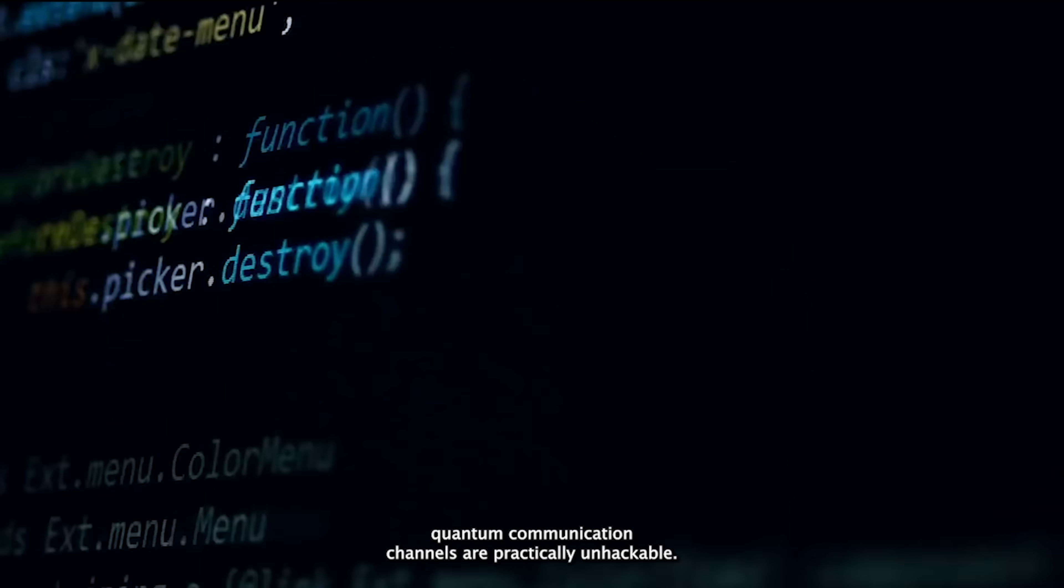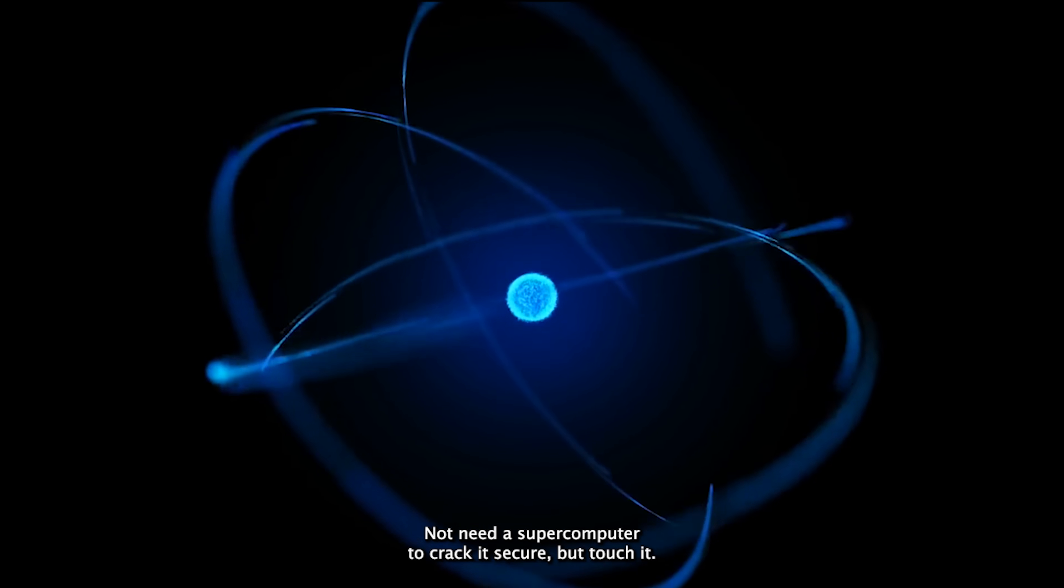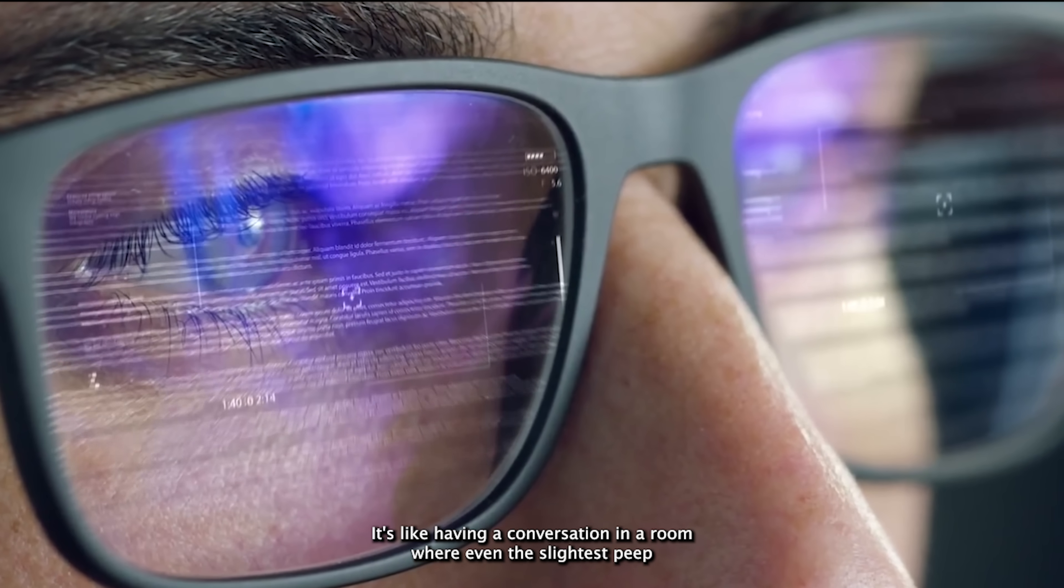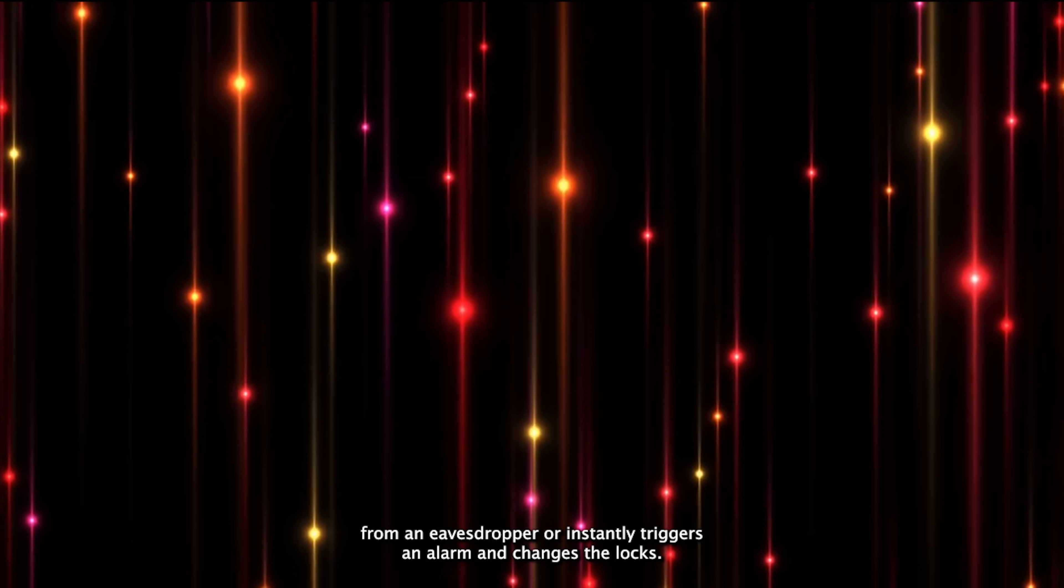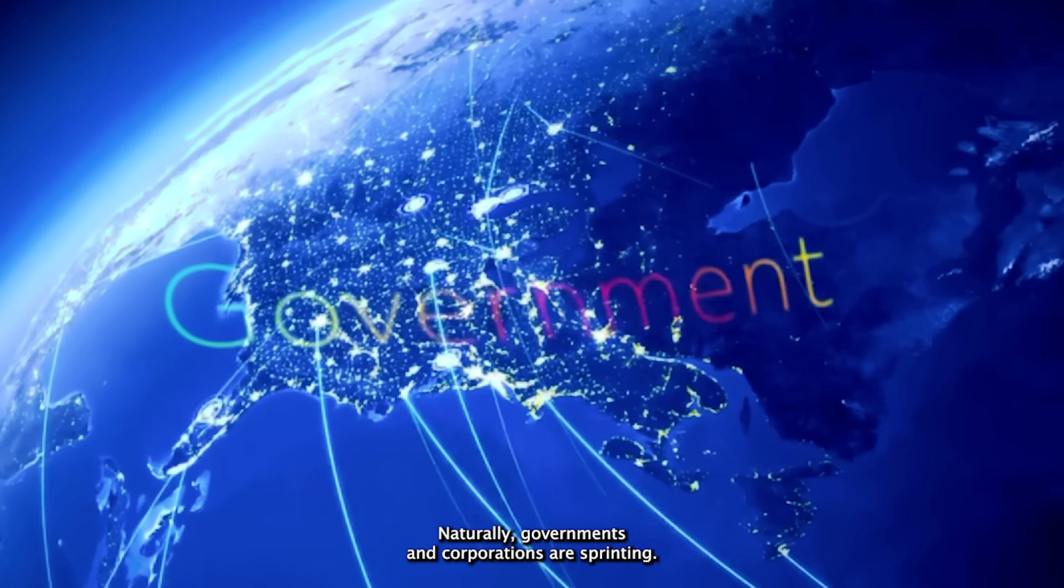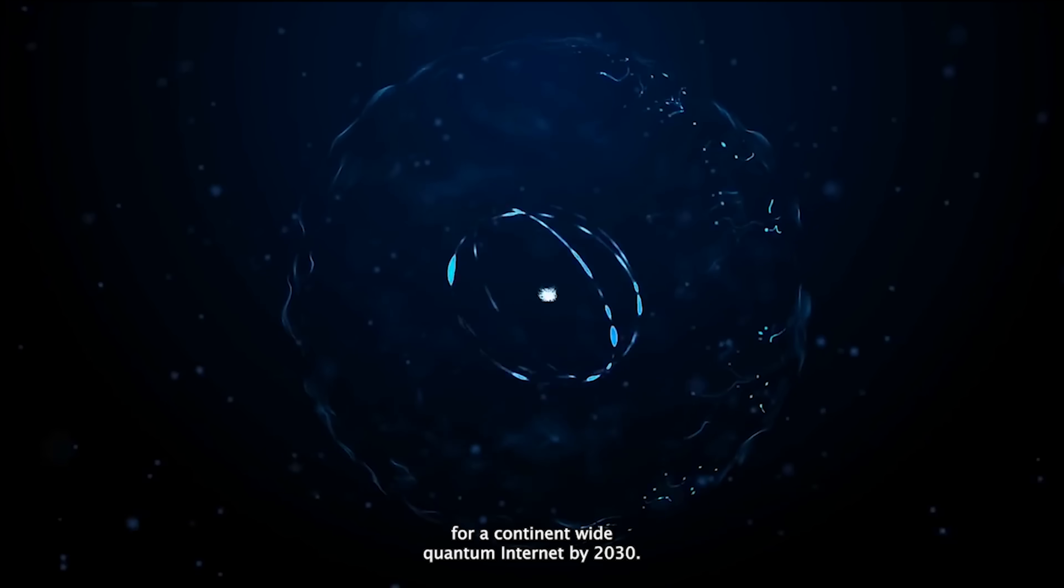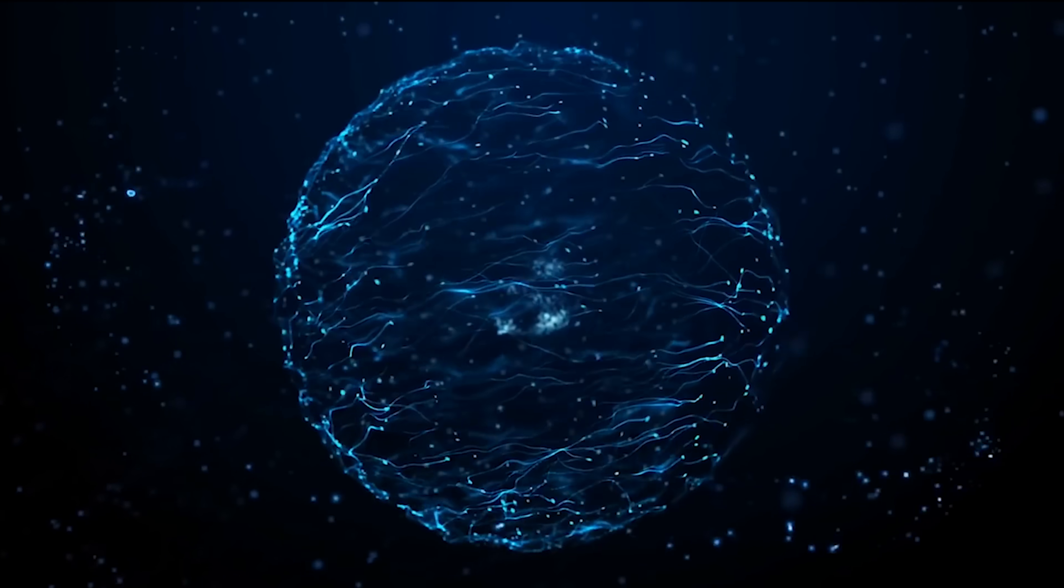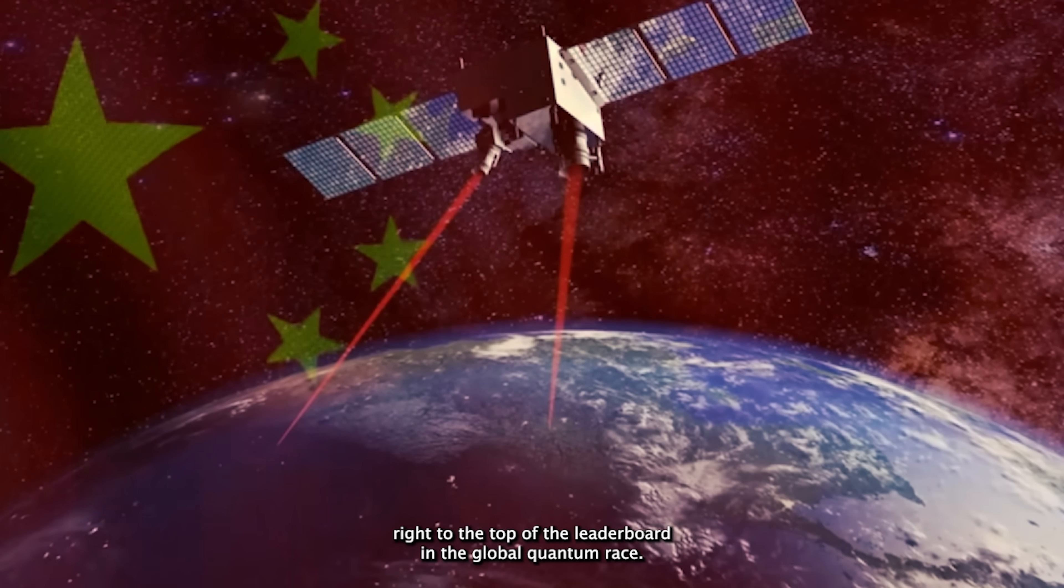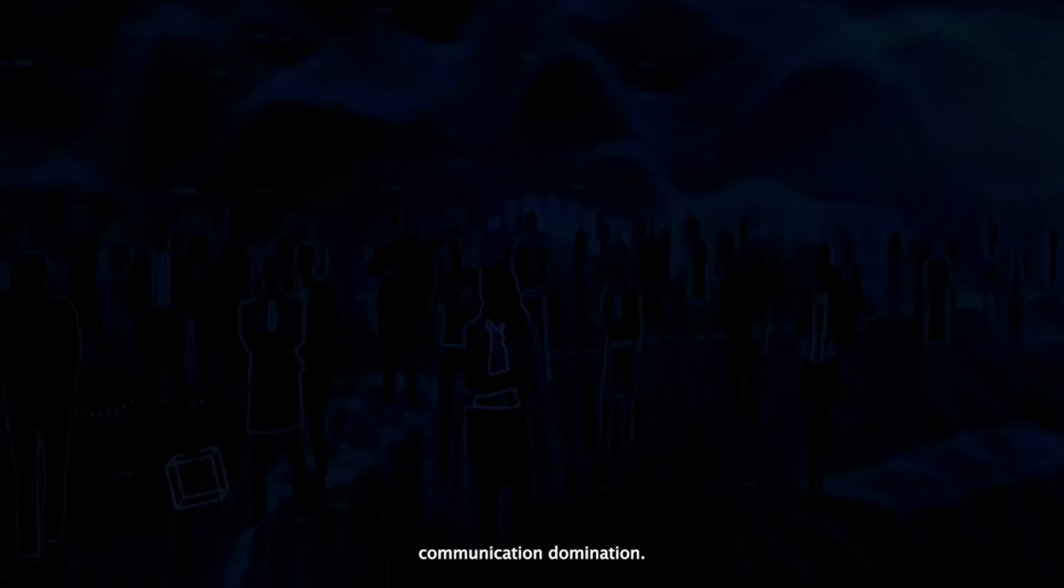We're entering a future where quantum communication channels are practically unhackable—not 'need a supercomputer to crack it' secure, but 'touch it and it breaks' secure. It's like having a conversation in a room where even the slightest peep from an eavesdropper instantly triggers an alarm and changes the locks. Naturally, governments and corporations are sprinting to get ahead. The European Union's Quantum Internet Alliance is already laying groundwork for a continent-wide quantum internet by 2030. Meanwhile, China's satellite-based quantum experiments have shot them right to the top of the leaderboard in the global quantum race.